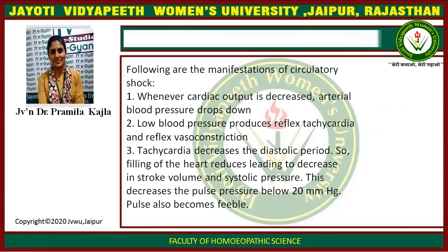Following are the manifestations of circulatory shock. First, whenever cardiac output is decreased, arterial blood pressure drops down. Second, low blood pressure produces reflex tachycardia and reflex vasoconstriction. Third, tachycardia decreases the diastolic period, so the filling of the heart reduces, leading to decrease in stroke volume and systolic pressure. This decreases the pulse pressure below 20 mmHg and the pulse also becomes feeble.